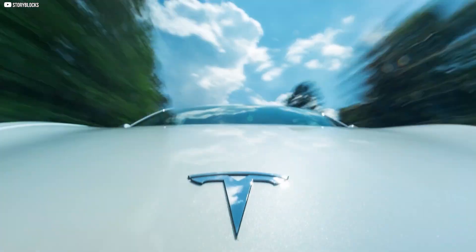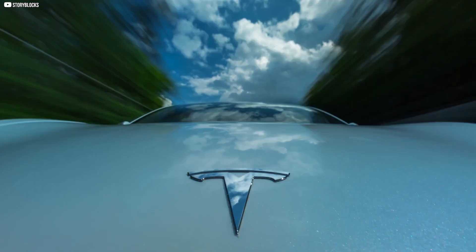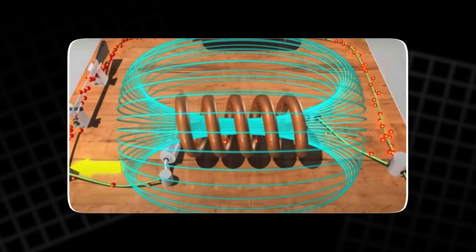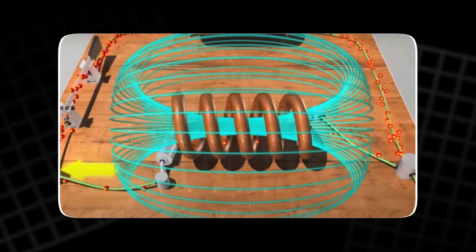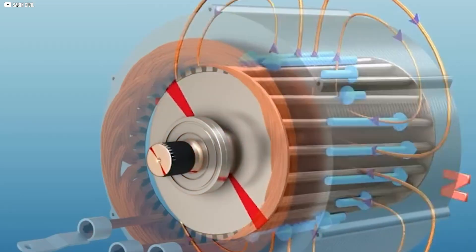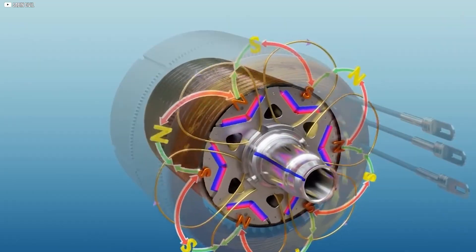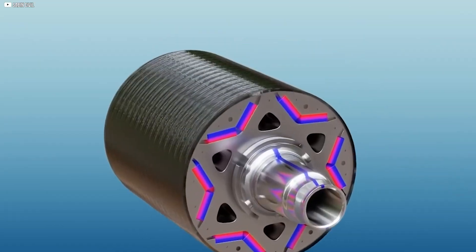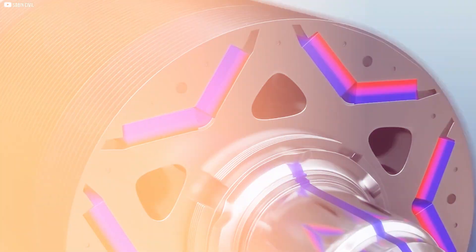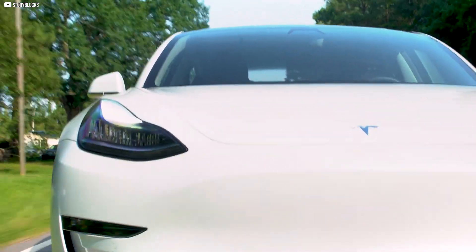However, at high speeds, they face a major issue: Back Electromotive Force. As the rotor spins faster, the magnets induce a voltage in the stator that opposes the input voltage, reducing maximum speed and efficiency.